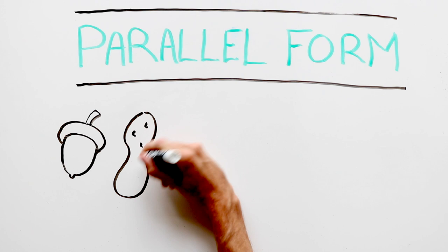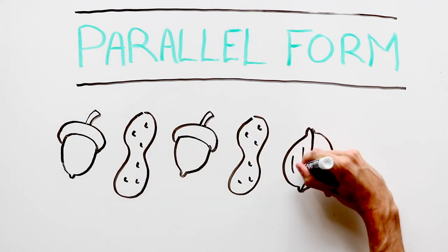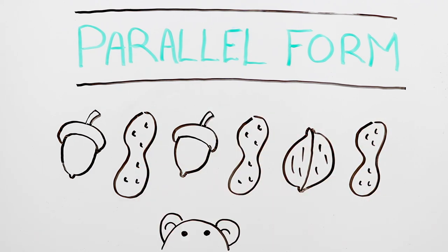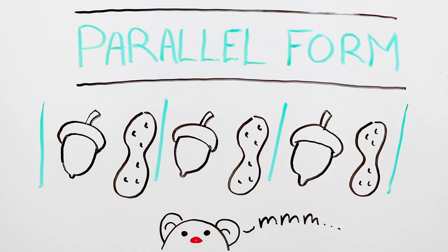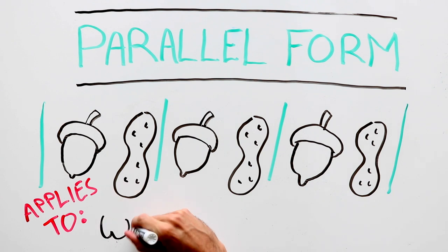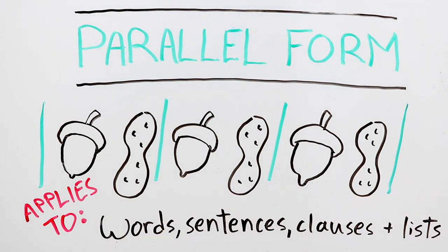Writing in parallel form means using the same pattern of words when two or more things have the same level of importance. This same pattern means using the same tense. It applies to words, sentences, clauses and lists so that they all look and sound similar in form.